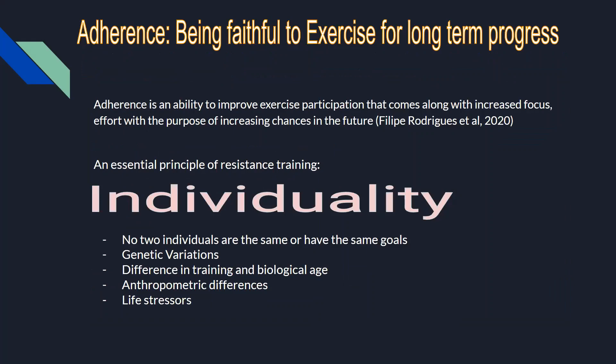Individualization is very important. It's a necessary means to increase adherence to exercise, because we need to consider the principle of N equals one — meaning everyone has different goals, and no two individuals are the same. People have different genetic variations, different training ages, biological ages, anthropometric differences, different limb lengths, different limb sizes, different body sizes, a variety of different muscle fiber compositions — type one muscles, type two fibers — and different life stresses, which we have to respect when programming exercises for our clients or athletes.